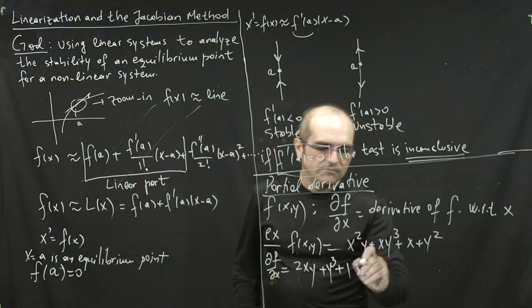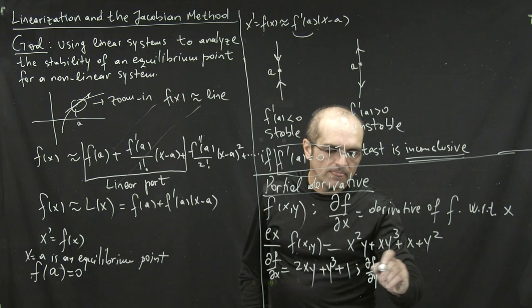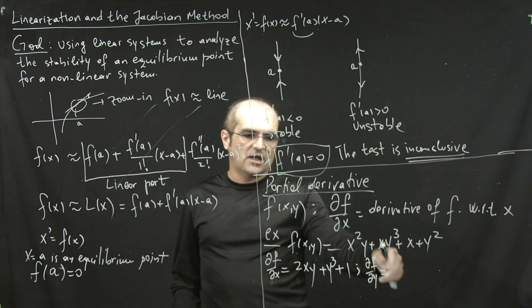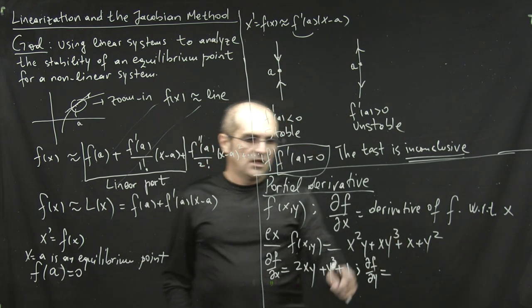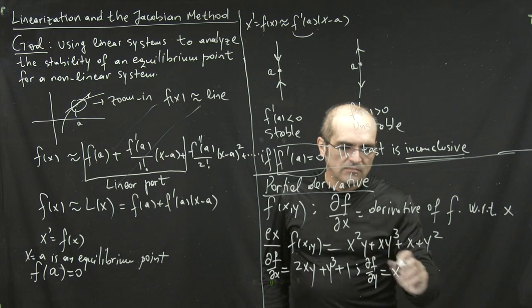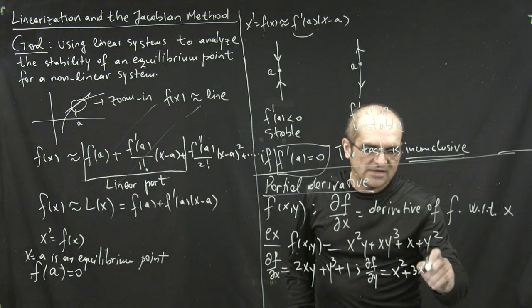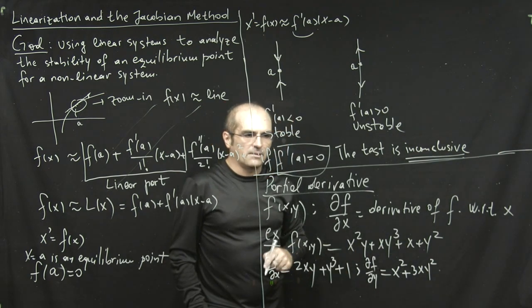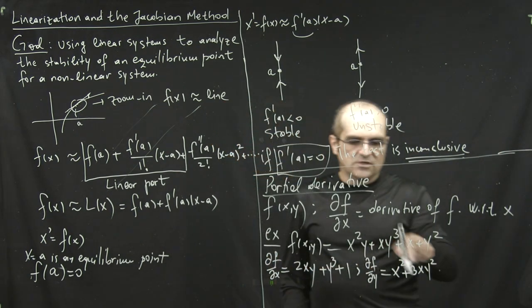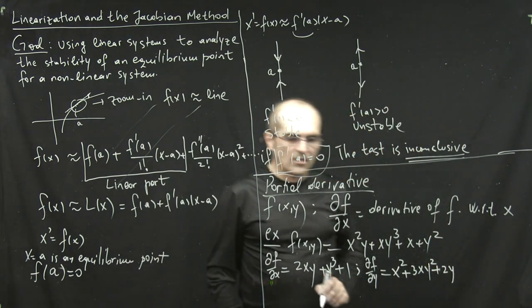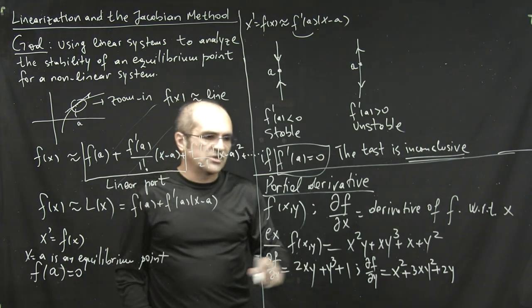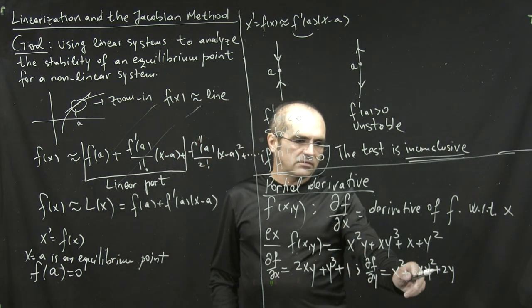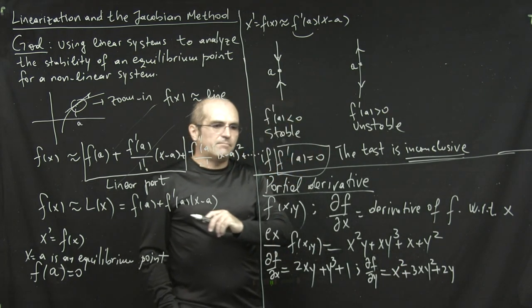When you do partial y, you flip the concept, right? I mean, now x is a constant, so that's why x will disappear here, and y is your variable. So, this is going to be x squared times one plus three xy squared. Yeah? x is a constant. The derivative of y third is three y squared. x goes away, and then plus two y. Okay? So, partial x, 2xy, y third plus one, partial y, x squared, three xy squared, plus two y. So,